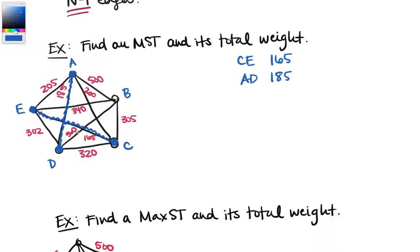We want the next smallest weight. We've got 205, but 200 is going to be the next cheapest — edge AC with weight 200. Keep in mind this edge does not create a circuit. What matters for circuits is the vertices, not where edges cross. This isn't a circuit because if we start at E and follow these edges around, we don't end up back where we started.